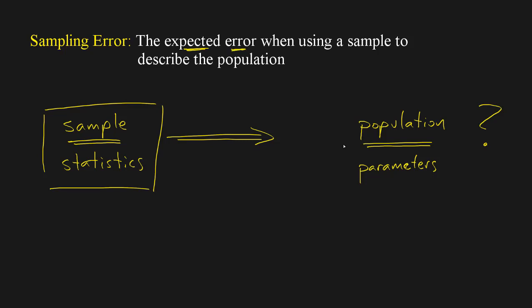We can expect that there's going to be some discrepancy, some error. For example, if I take a sample of people's ages — say I want to know what the average age of the university is — I take a sample of a hundred people, certainly not everybody who attends the entire university. Out of my hundred people I might get an average age of something like 22.3 years old.